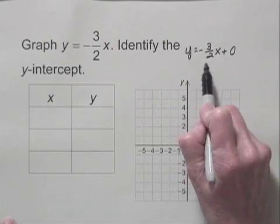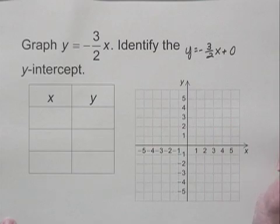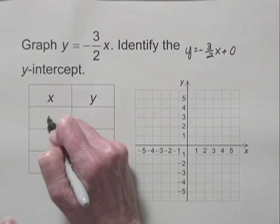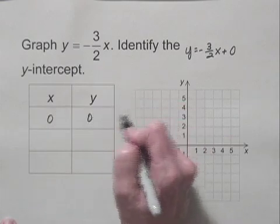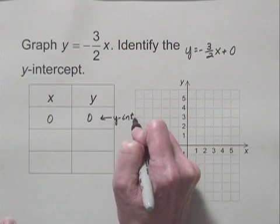This equation is written in the form y equals mx plus b, and that tells us then that the y-intercept is 0, 0, that 0 is the second coordinate of the y-intercept. So I have the point 0, 0, and this is the y-intercept.